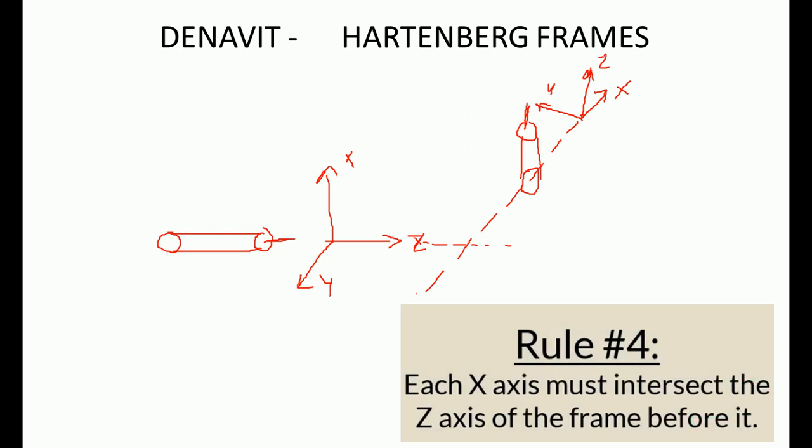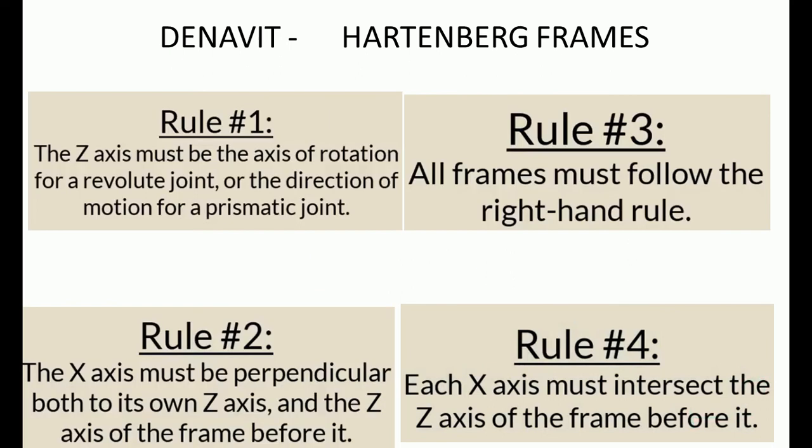These are the four rules given by Denavit and Hartenberg for creating the principal axis frame. First, the Z axis should be the axis of rotation or translation. Second, the X axis must be perpendicular to its own Z axis and the Z axis of the previous frame. Third, the Y axis is created using the right-hand thumb rule. Fourth, when extending the X axis of the current frame backward, it must intersect the Z axis of the previous frame. Using these four rules we can create frames for a given configuration of a robotic arm.